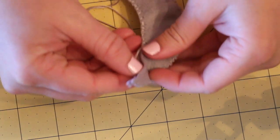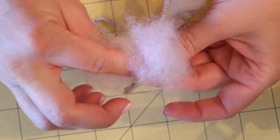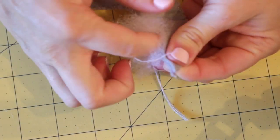For each shape, leave a small opening big enough to stuff with the polyfill. I used a small chopstick to push my polyfill into the shape easier, and it helps fill the small corners.